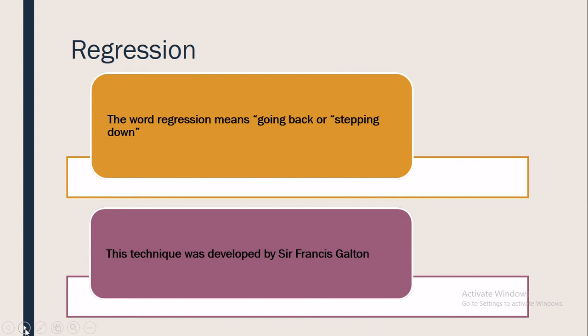The dictionary meaning of regression is 'going back' or 'stepping down.' This term was first used by Sir Francis Galton in the year 1877, while he was studying the relationship between the heights of fathers and sons. It was introduced in his paper 'Regression Towards Mediocrity in Hereditary Stature.' His study of about 1000 fathers and sons revealed that tall fathers tend to have tall sons and short fathers tend to have short sons.